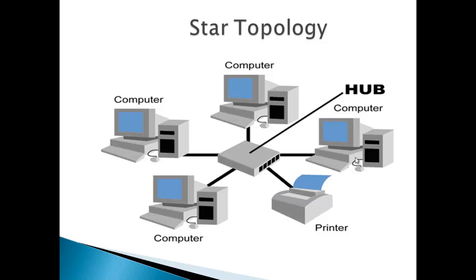All the data on star topology passes through the central device before reaching the intended destination. Hub acts as a junction to connect different nodes present in the network and at the same time it manages and controls the whole of the network.